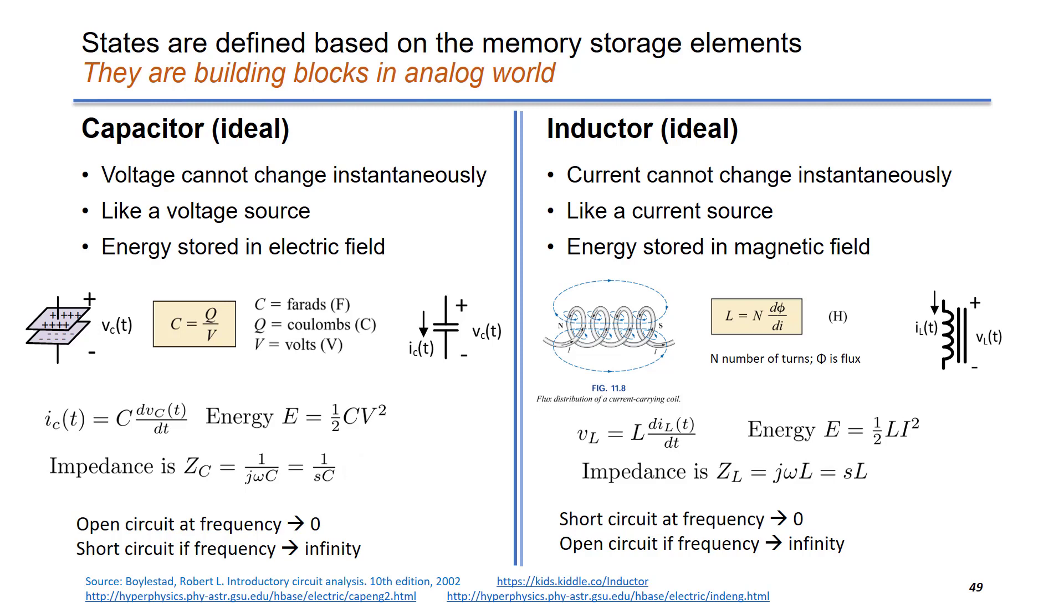On the right-hand side, we have inductor. The inductor is like a current source, because the current cannot change instantaneously. The energy is saved in magnetic field. This is an illustration of an inductor. You can see we have four turns of windings.